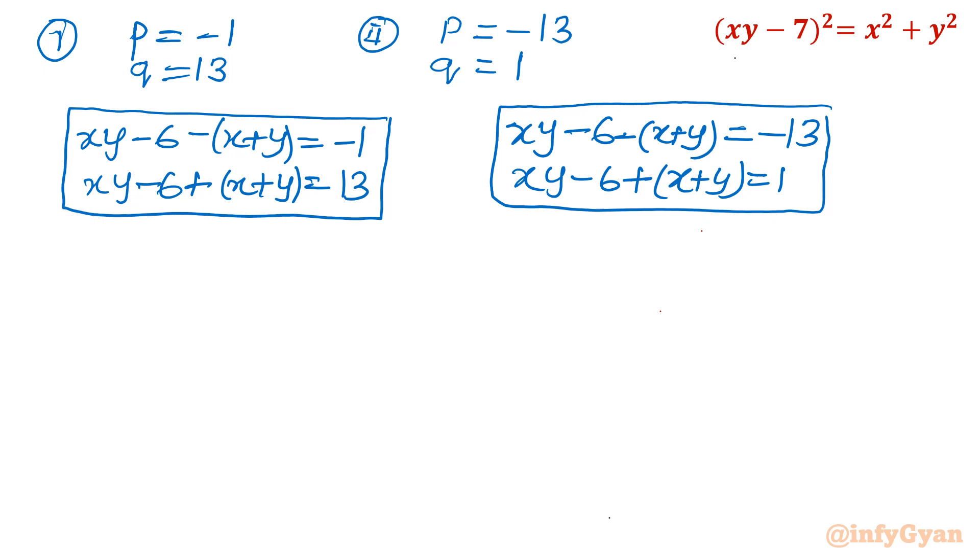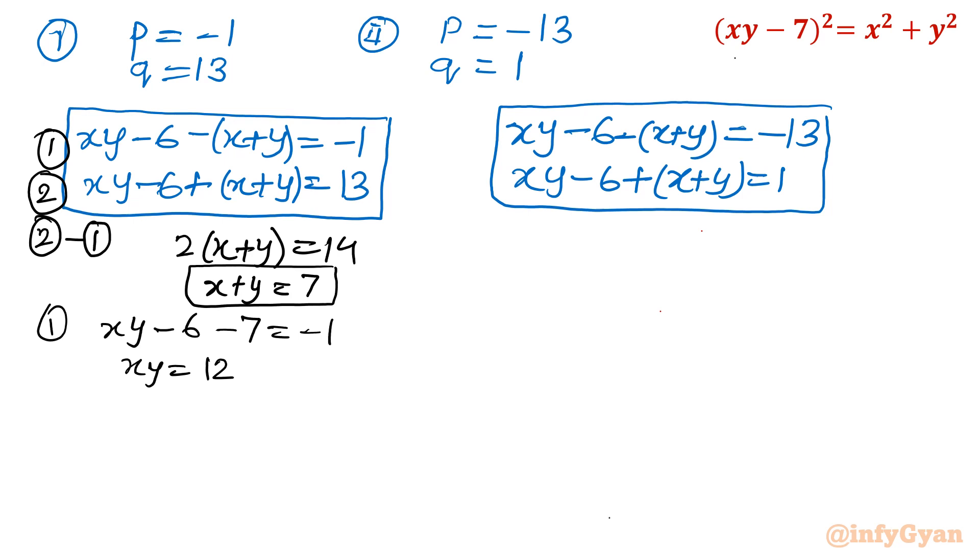So let us solve it. I am calling this equation 1 and this equation 2. I will take equation 2 minus equation 1. So 2 minus 1, I will be having 2 times x plus y would equal 13 minus of minus 1, which is 14. So x plus y would be 7. Put this in equation 1. So equation 1 will be xy minus 6 minus 7 equal to minus 1. xy would be equal to 13 minus 1, so 12.